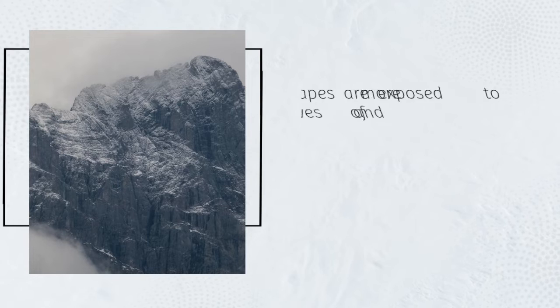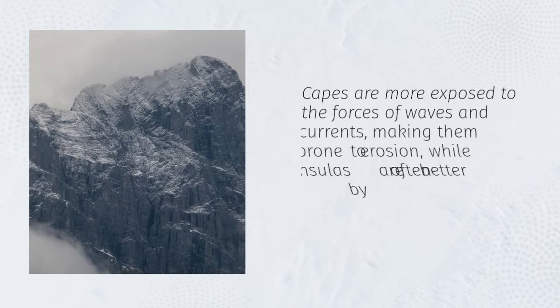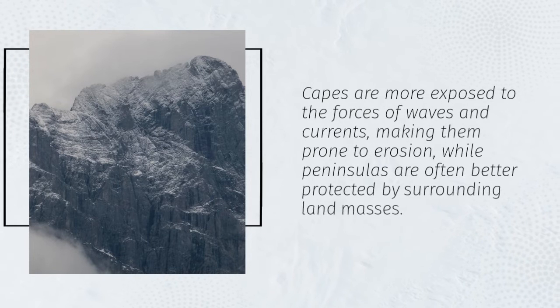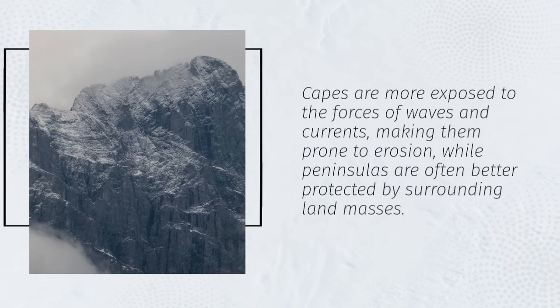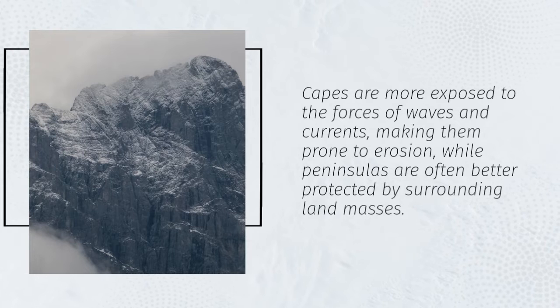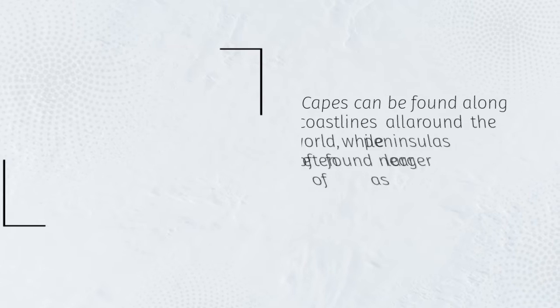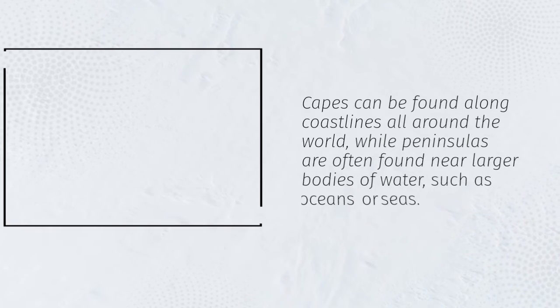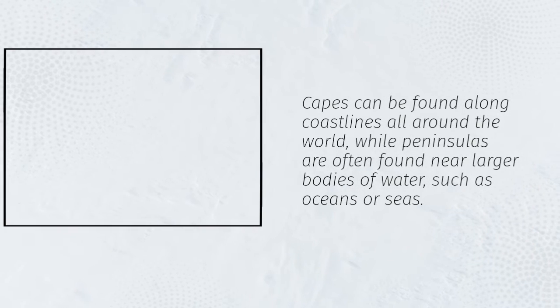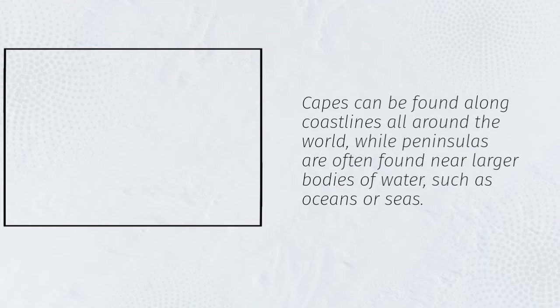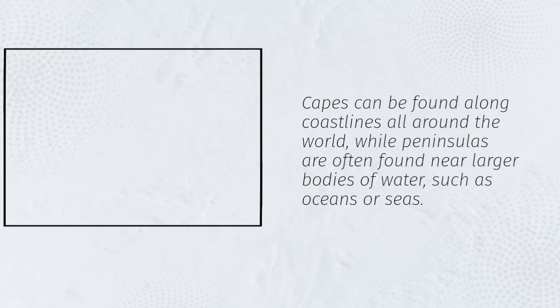Capes are more exposed to the forces of waves and currents, making them prone to erosion, while peninsulas are often better protected by surrounding landmasses. Capes can be found along coastlines all around the world, while peninsulas are often found near larger bodies of water, such as oceans or seas.